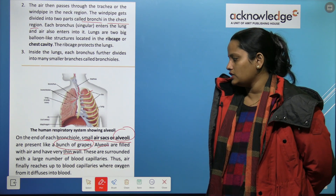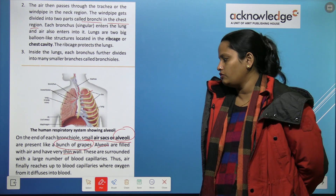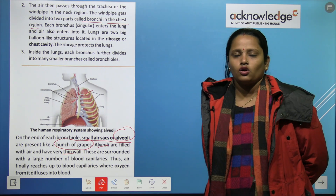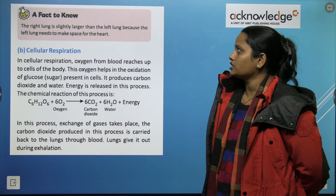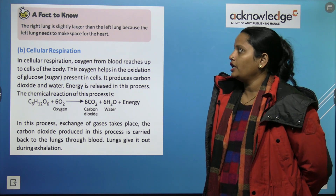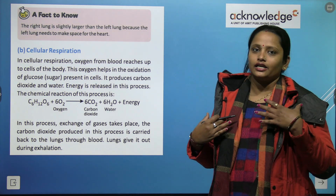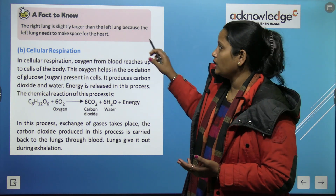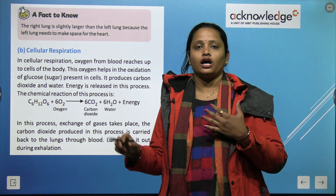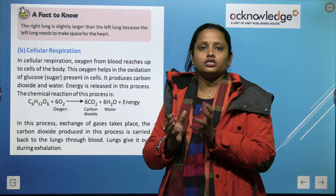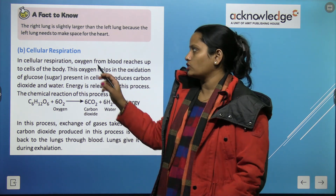At the end of each bronchiole, small air sacs called alveoli are present, like a bunch of grapes. The alveoli are filled with air and have very thin walls. They are surrounded by a large number of blood capillaries. Air finally reaches the blood capillaries where oxygen from it diffuses into the blood. The right lung is slightly larger than the left lung because the left lung needs some space for the heart.